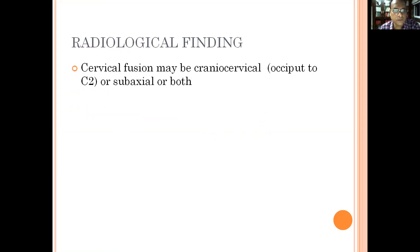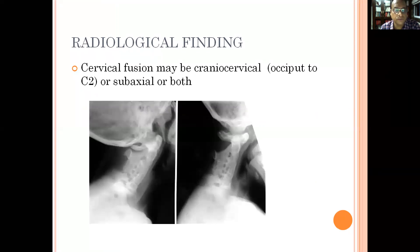Radiologically, you can always see a cervical fusion in Klippel-Feil syndrome, which may be craniocervical — i.e., occipital to C2 — or subaxial, or a combination of both of them.